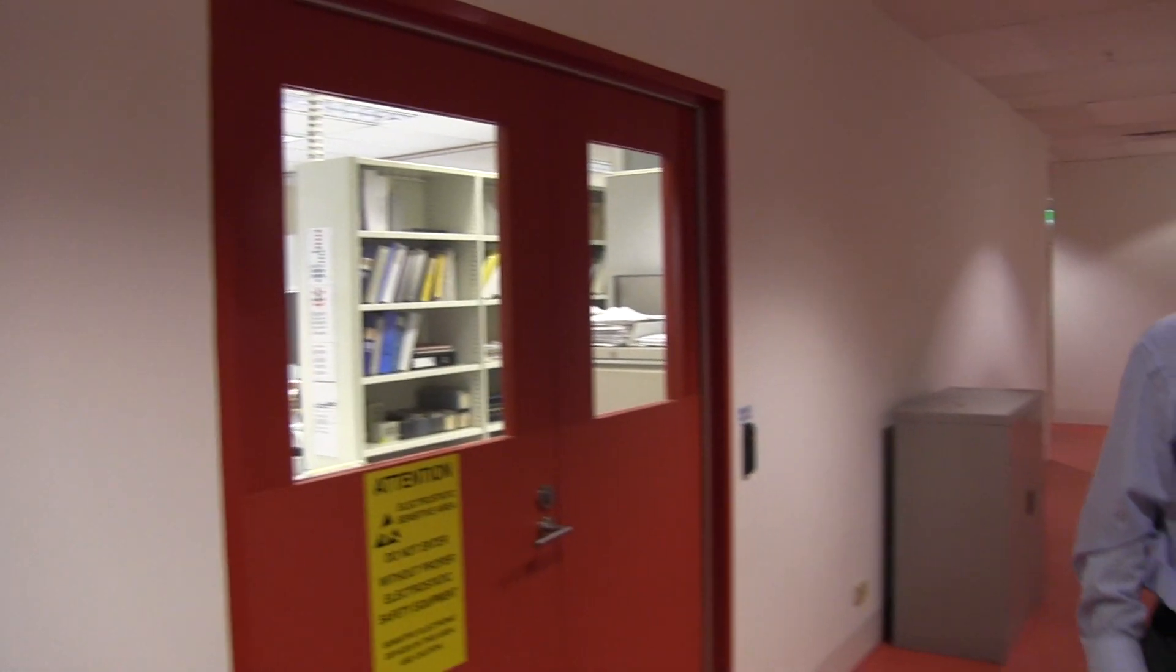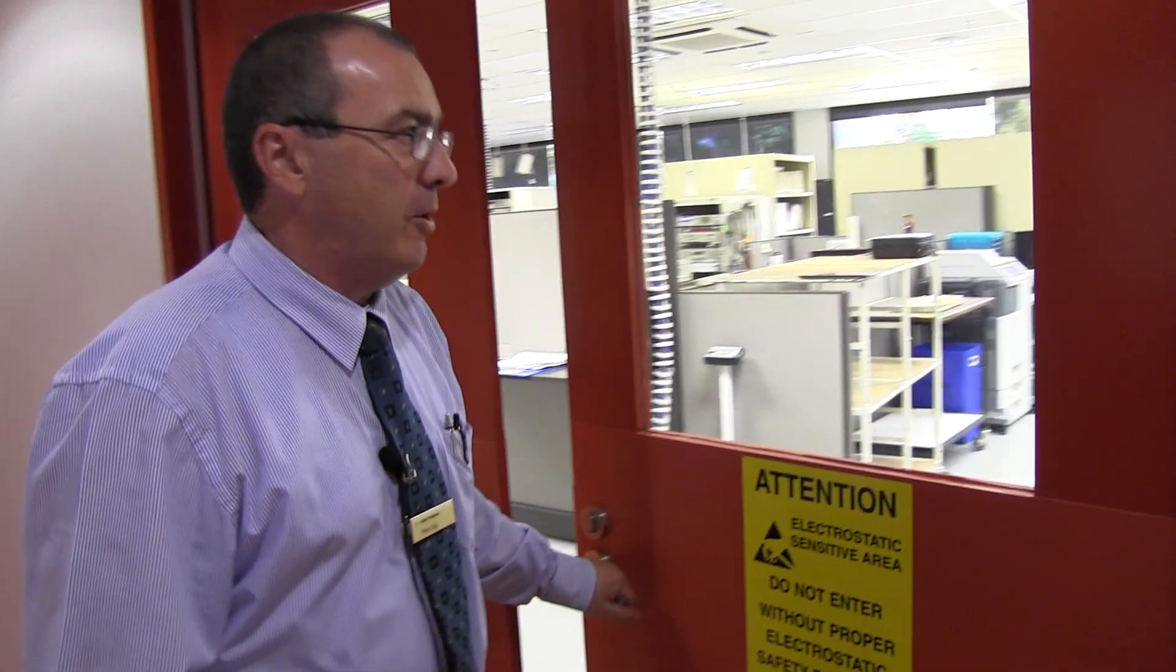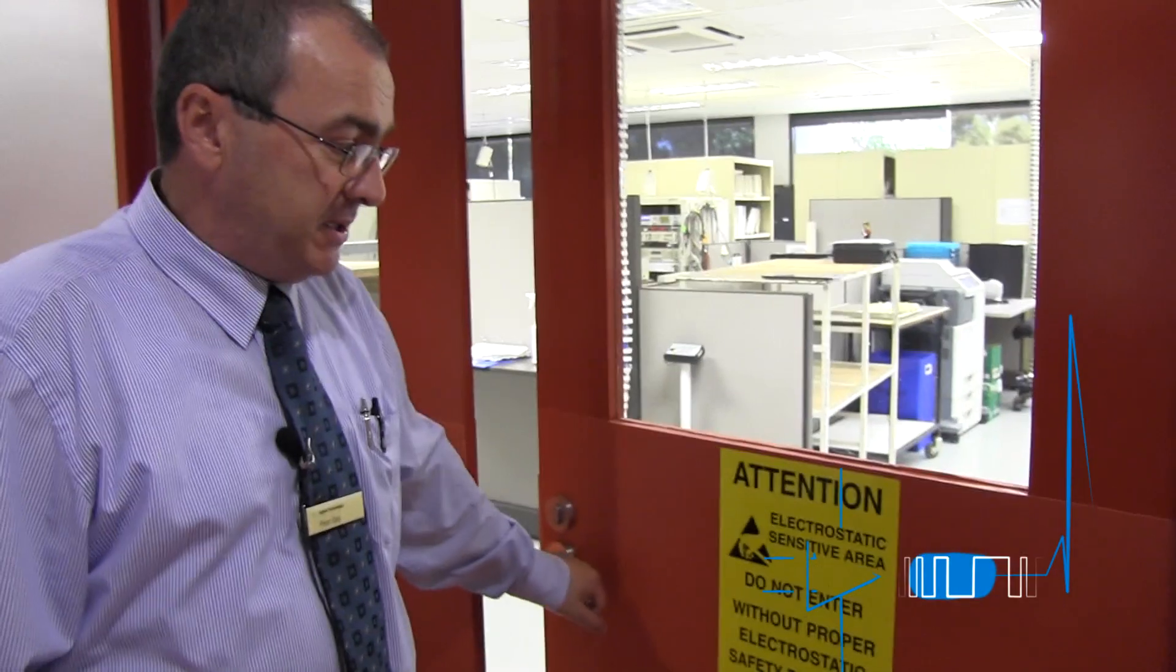That's the standards lab, but Pete's going to show us around the working lab. This is our general laboratory and service area. It's an electrostatic safe area, so we have an electrostatic floor that's grounded and requires electrostatic protection. I'll ask Dave to keep his hands in his pockets and not touch any gear.